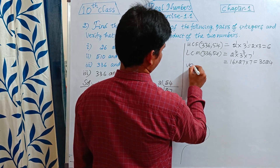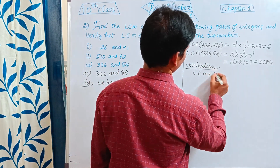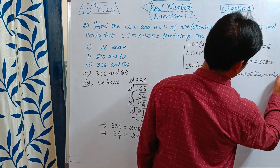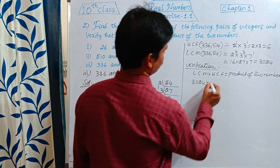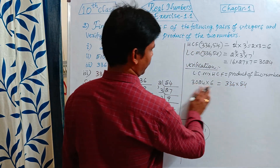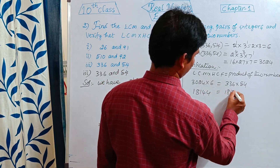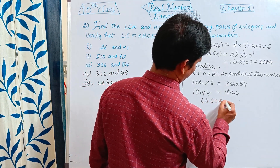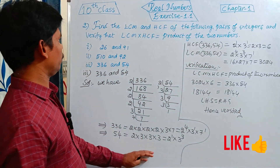Verification for 336 and 54: product of LCM and HCF = 3024 into 6 = 18144. Product of the two numbers = 336 into 54 = 18144. LHS equals RHS, hence verified. This completes the second question.